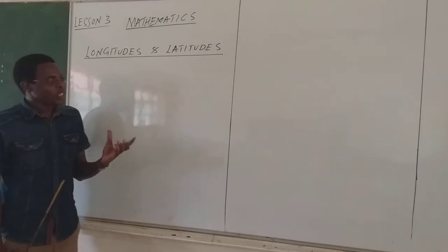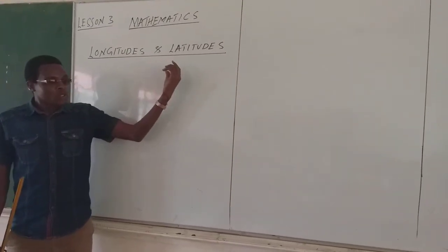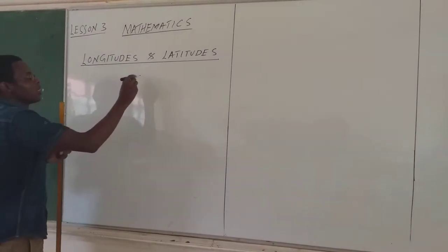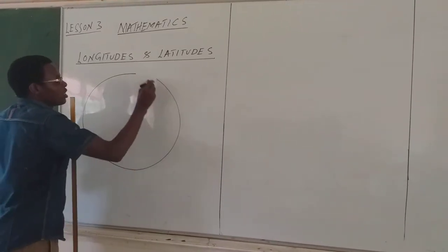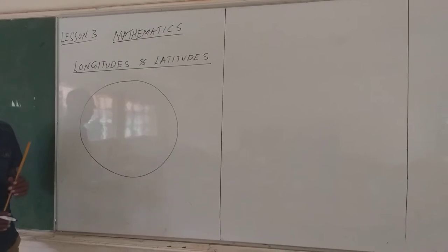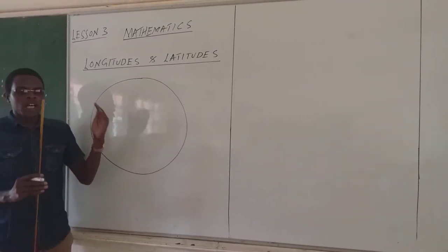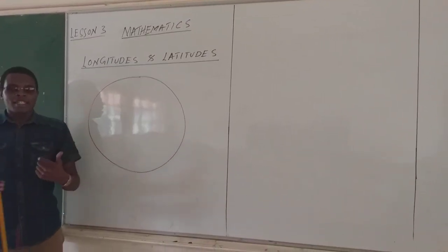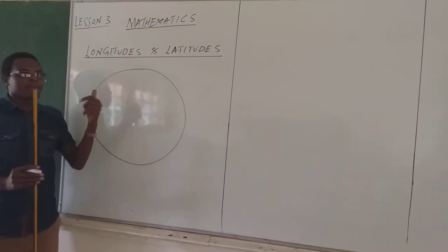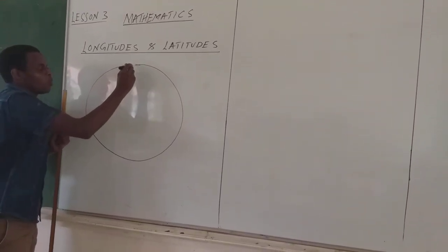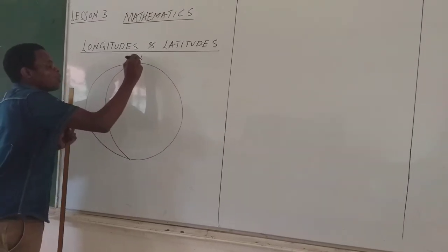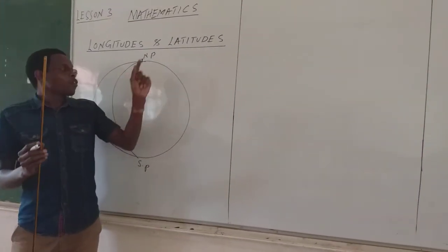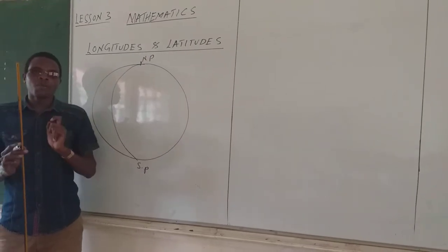If I can frame it in the introduction, when we talk about latitudes and longitudes — longitudes, if I have to draw the globe, I am going to show you. If I have to give the definition of longitudes, we will say they are the imaginary lines, and I am going to emphasize the word imaginary. They are imaginary lines which are running from North Pole to South Pole.